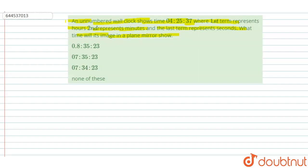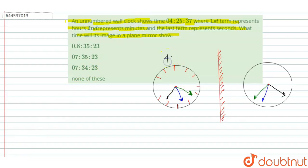Then firstly, draw the figure of this question. This is a figure of this question. And this represents 4 hour 25 minute 37 second. And this is a plane mirror and the image of this question. And we have to find the value of the total time in mirror image.